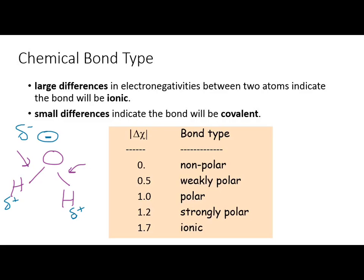What we're describing is a polar molecule. If somebody polarizes a situation, the group separates — agrees and disagrees. Similarly, a polarized molecule has electrons pulled toward the higher electronegativity atom, making that side partially negative and the other side partially positive.